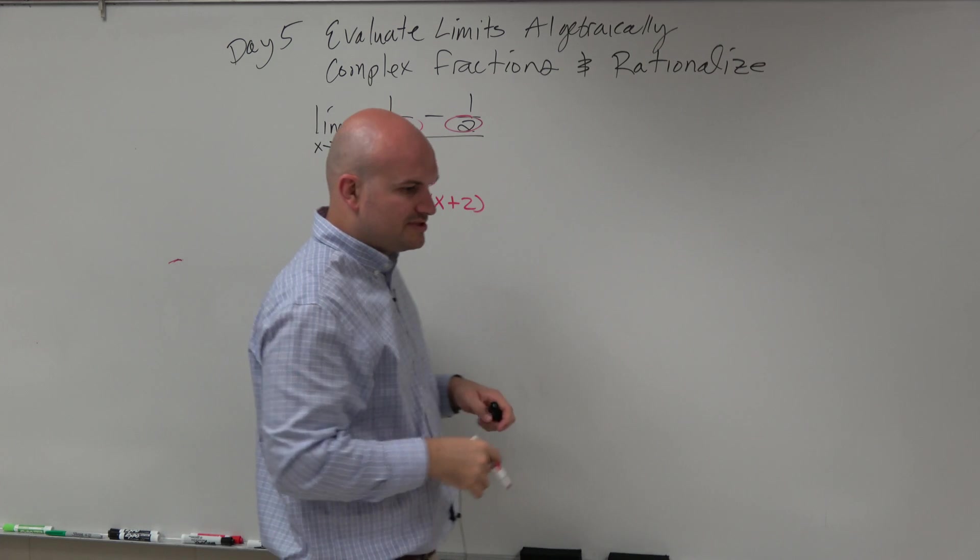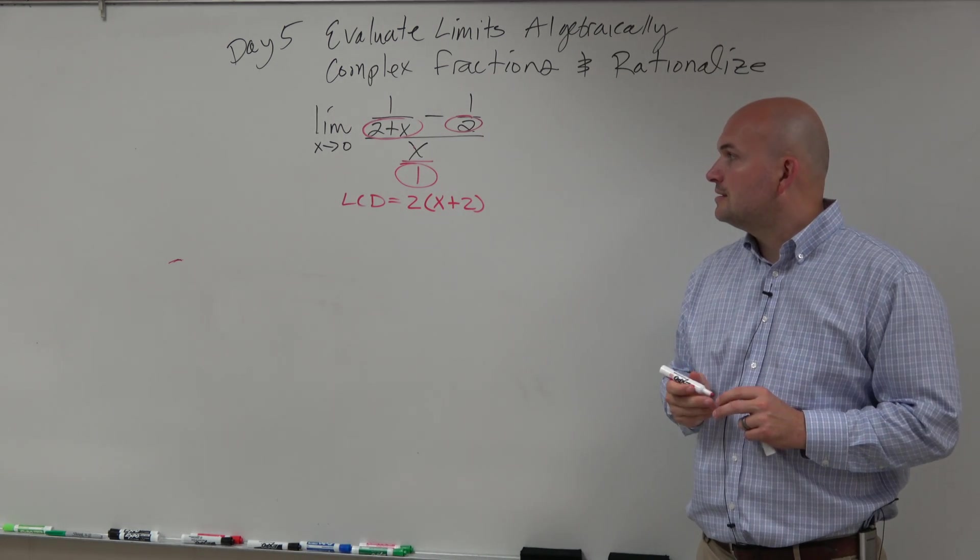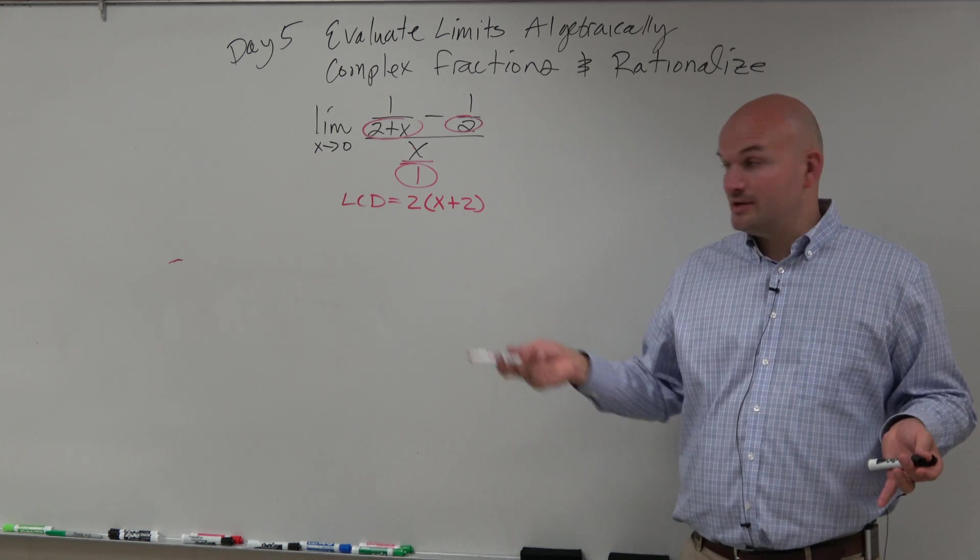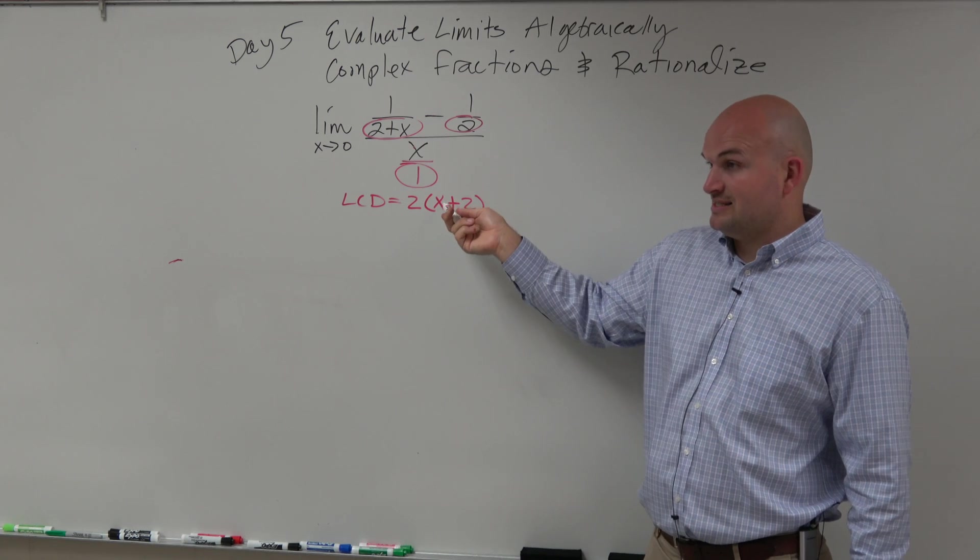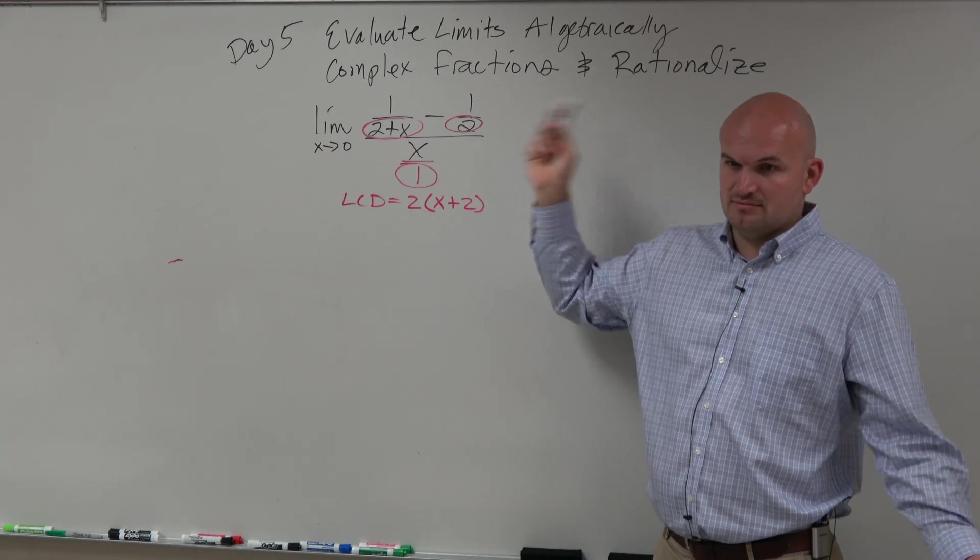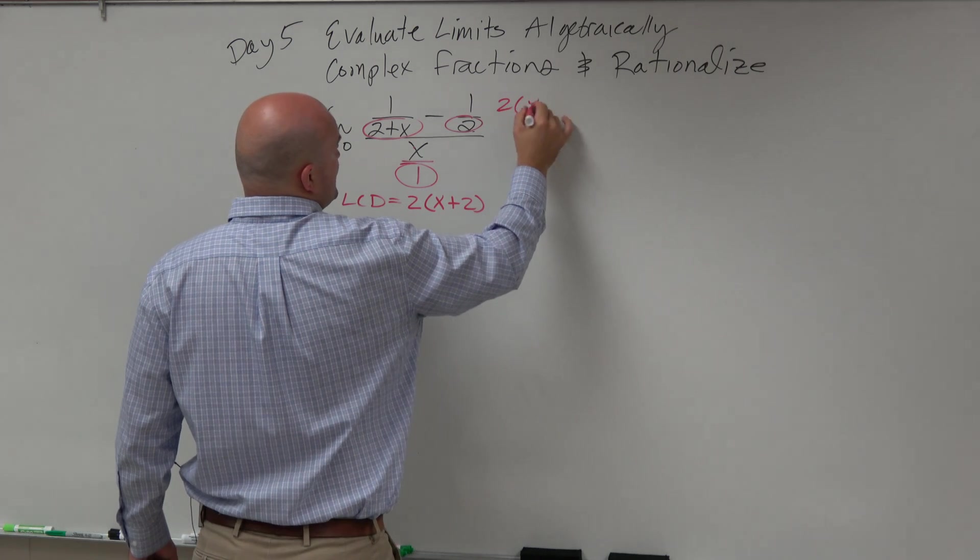I can write my common denominator as 2 times x plus 2. Just rewrite that as x plus 2. It doesn't really matter for that. So that's going to be my common denominator. And I don't really need to write 1, because 1 obviously divides into it. But x plus 2 divides into that, and 2 divides into that. So now I'll multiply the top and the bottom by 2 times x plus 2.